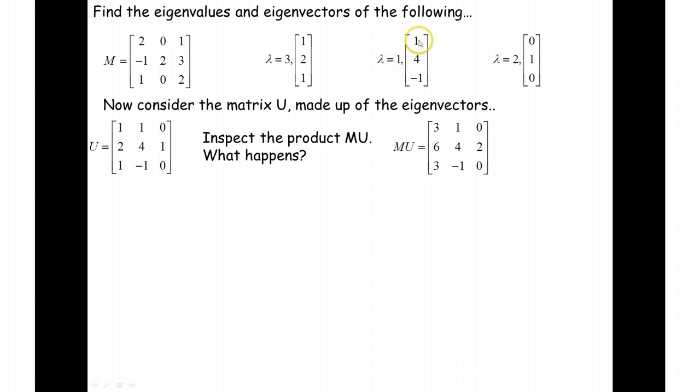So this would be a line of invariant points, 1, 4, negative 1. And this here would just be 0, 2, 0. And because I've put them all together, all these vectors together into a matrix, and when I've multiplied it by this, I've just got this here.